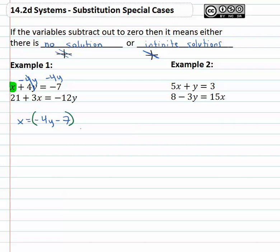Now that equation is x equals negative 4y minus 7. And if x is equal to this stuff, we know we can plug that stuff in for x in the other equation. 21 plus 3 times negative 4y minus 7 equals negative 12y.